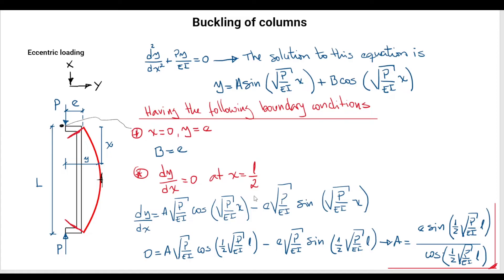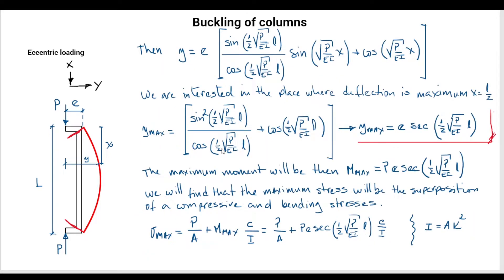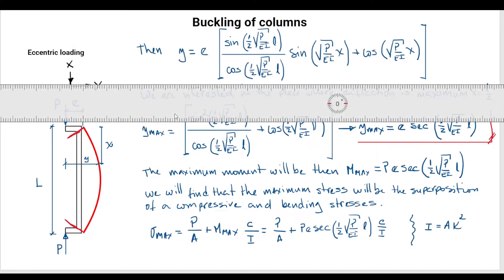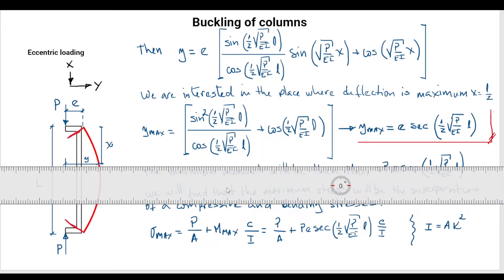Having found constants A and B, we can now formulate the equation for the deformation of the column. The maximum deformation is located at the middle of the beam. Substituting x equals L over 2, we find that the maximum deformation is represented by a trigonometric formula. Knowing the maximum deformation is important because, when dealing with buckling, we need to know the maximum deformation the column experiences due to a load applied at a certain distance from the longitudinal axis.